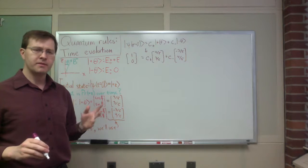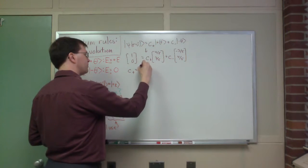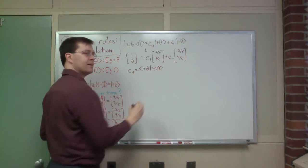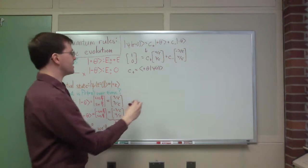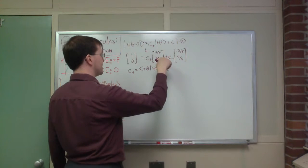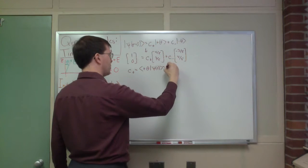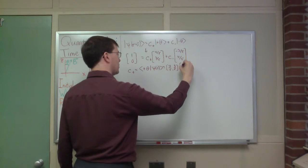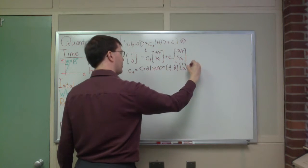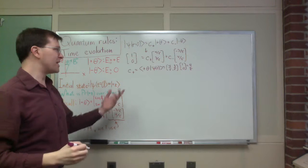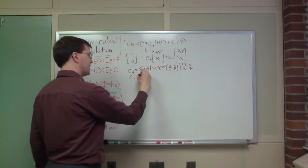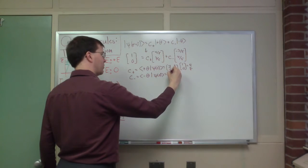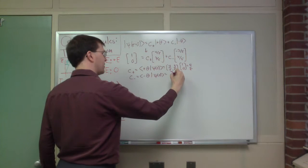The easier way: c-plus equals the inner product of the plus theta bra with the psi-zero ket. That bracket gives us c-plus. Taking the conjugate transpose, that's (4/5, 3/5) times (1, 0), which equals four-fifths. By the same token, c-minus is the inner product of the minus theta bra with psi-zero, and that comes out to be minus three-fifths.